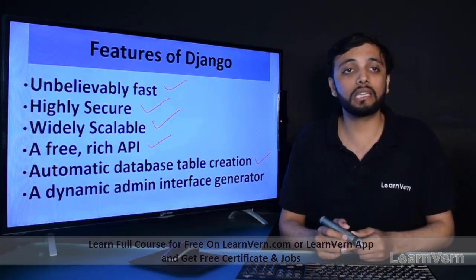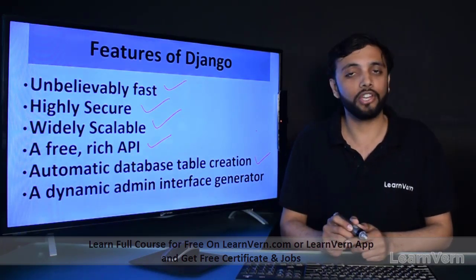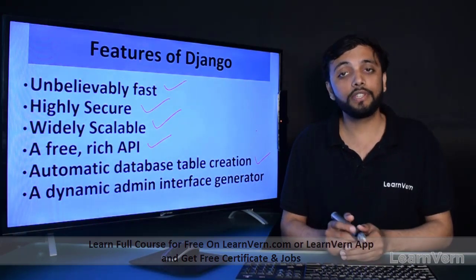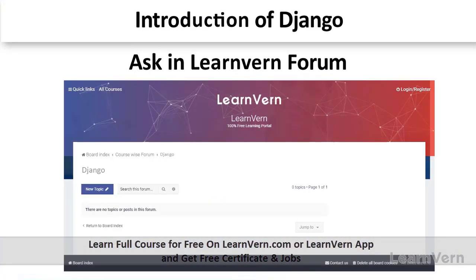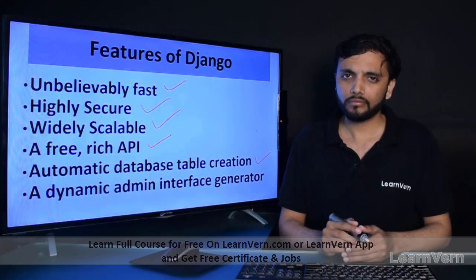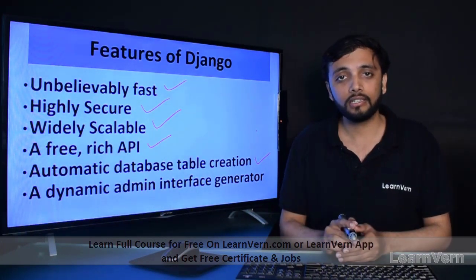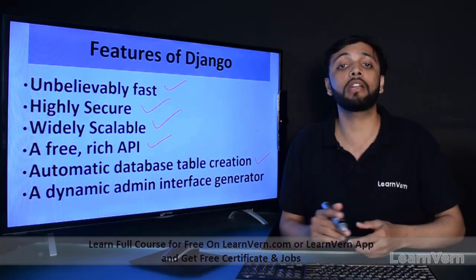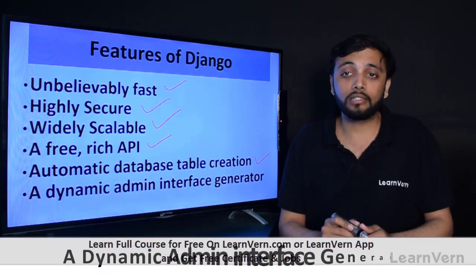When you write the migrate command in the command prompt, Django will automatically create tables in the database — the tables which you have declared in your models. We will cover models later on. If the tables already exist, it updates them; if they don't exist, Django automatically creates the table and inserts the data into it. This is a main and distinctive advantage and feature of Django.